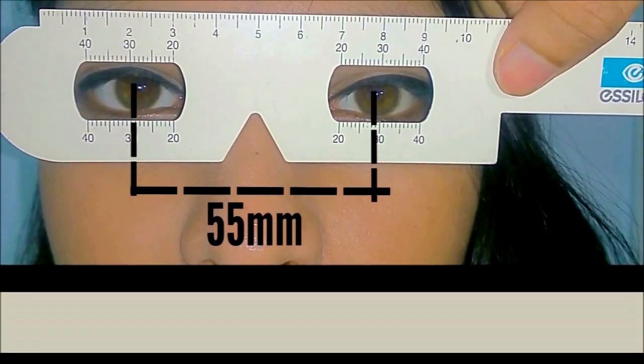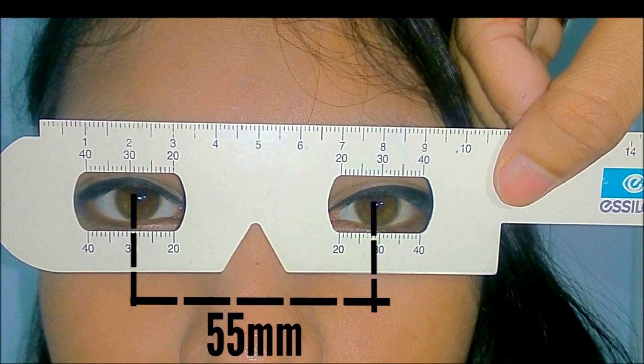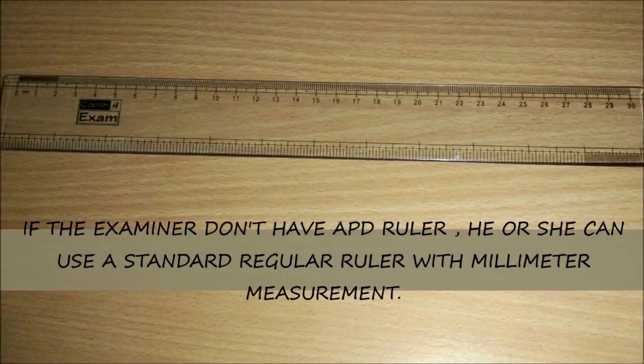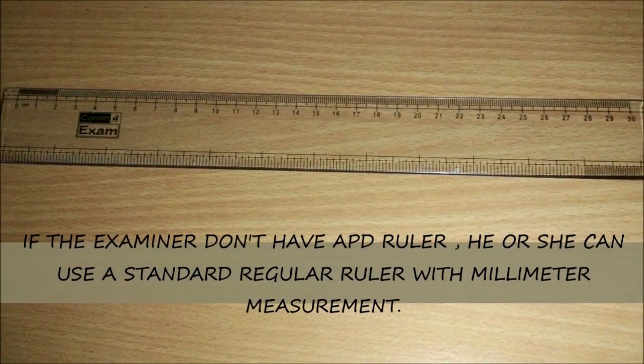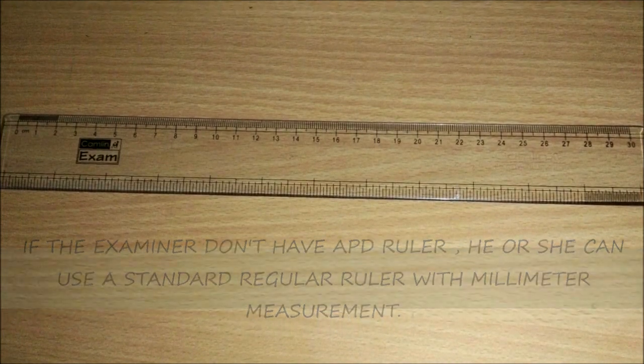Add these two numbers together to get the patient's pupillary distance measurement. The examiner should repeat this process several times, after which the average will be taken. In general, an adult pupillary distance measurement will fall somewhere between 55 and 72 millimeters. If the examiner does not have a PD ruler, he or she can use a standard ruler with millimeter measurements for measuring binocular pupillary distance.